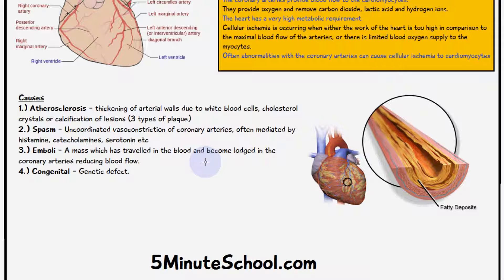Another cause is some kind of embolus, where a mass is dislodged from elsewhere in the body, travels in the blood, and becomes lodged in the coronary arteries, reducing or completely stopping blood flow to the heart. A final cause can be a congenital genetic defect. The next videos will be on stable and unstable angina, and another one will be made on myocardial infarctions and their pathophysiology specifically.